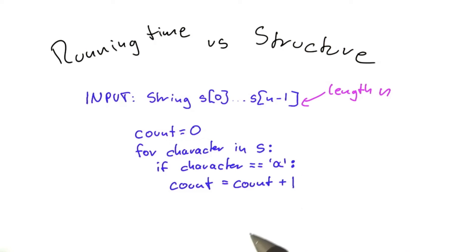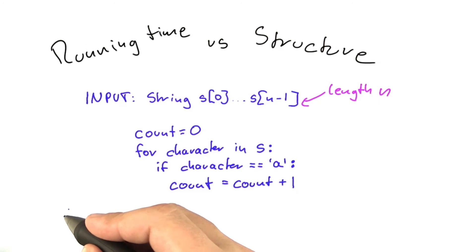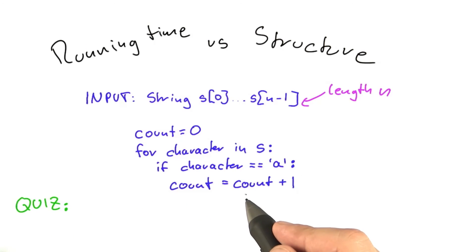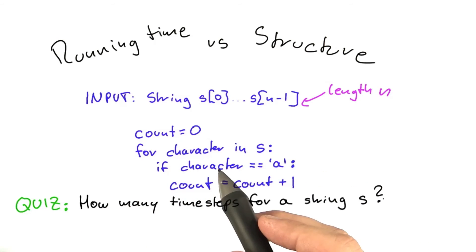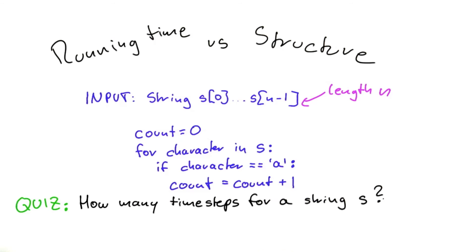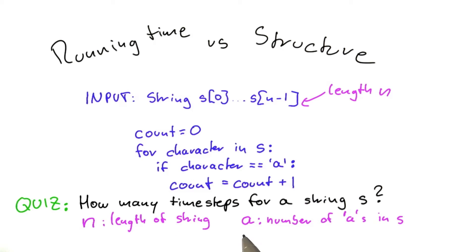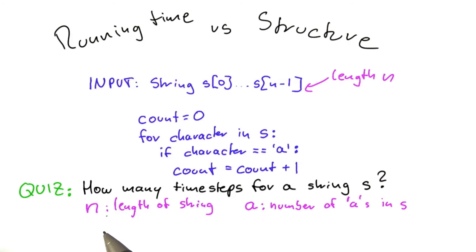What I would like you to do as our next quiz is tell me the number of time steps this algorithm takes for a given string s. To give that answer, there are two variables you'll have to take into account. One is n, the length of the string, and the other one — as you're going to find out — is a, where a denotes the number of times that the character 'a' actually appears in that string. So your answer is going to be some formula that includes n and includes a.